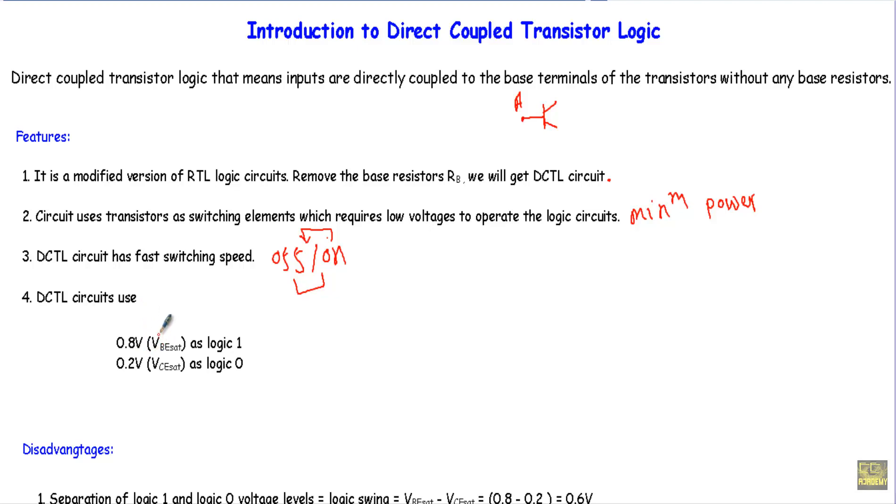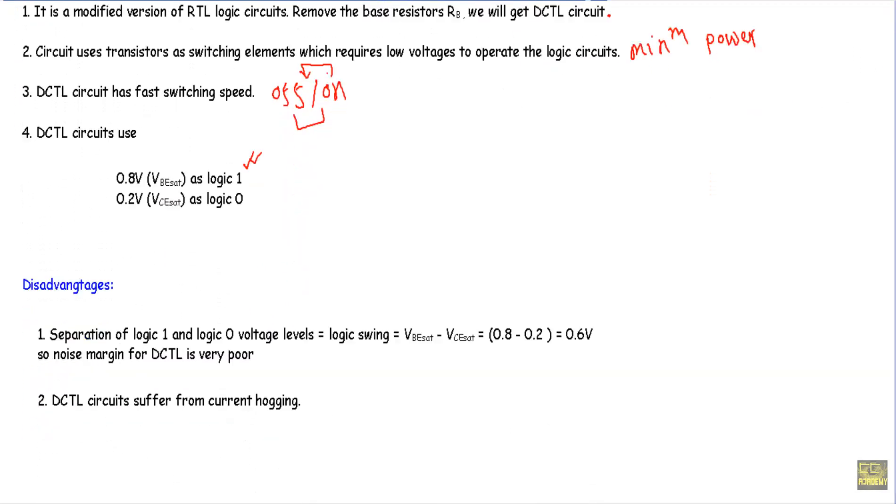The DCTL circuit uses 0.8 volts, the base to emitter junction saturation voltage, as logic one. When the transistor is in saturation, our VCE sat should be 0.2 volts. The DCTL circuit will use this 0.2 volts as our logic zero. These are the features of our DCTL logic family.